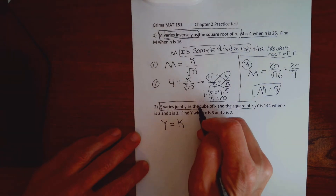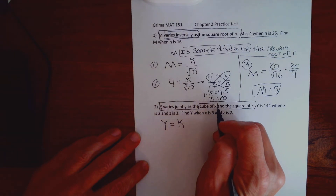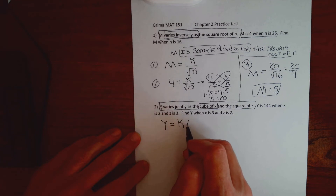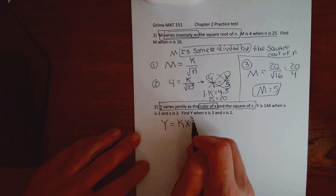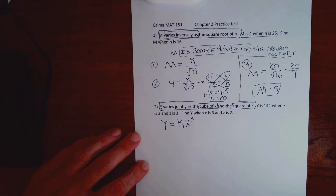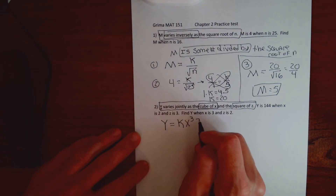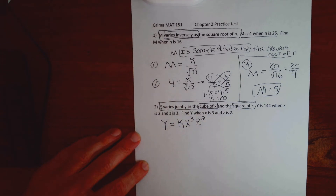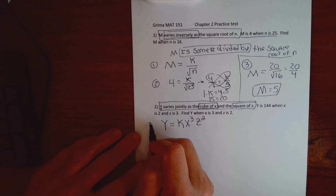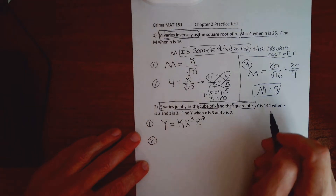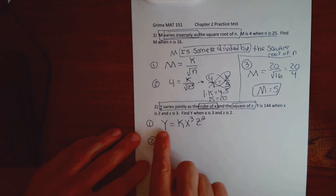Because I see the word 'jointly,' after the K I need two variables with appropriate exponents or radical symbols. The first variable after K represents the cube of X — since there's no 'root,' I get an exponent of 3. The second variable represents the square of Z — no 'root,' so the exponent is 2. That ends step one. I move on to the second sentence: take the numbers, plug them into my equation, and solve for K.